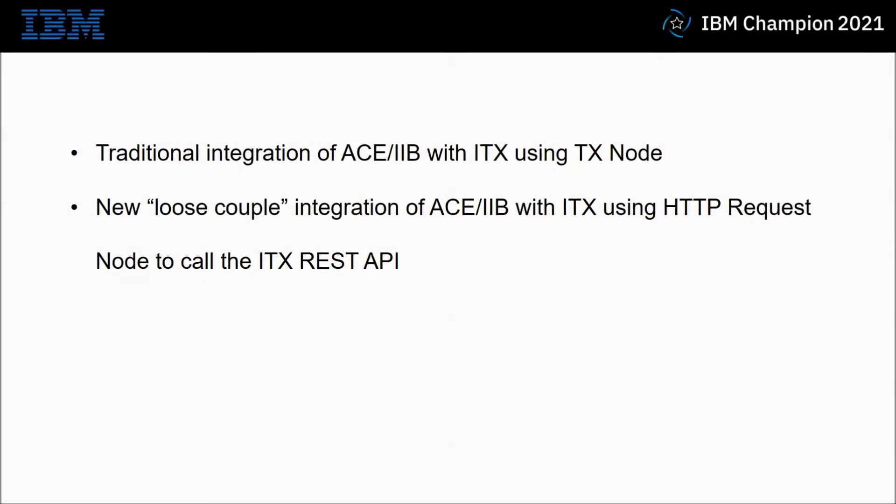For today's demonstration I'm going to be showing how to integrate ITX with either ACE or IIB using a couple of methods. The traditional integration using the ITX node and the toolkit of either ACE or IIB. The second method is a loose coupled integration where in IIB or ACE you use the HTTP request node to call an ITX map via the ITX REST API, which can be running on the same or on a remote server. There are distinct advantages to running the two items of software in this loose coupled method, which I shall go through during the demonstration.